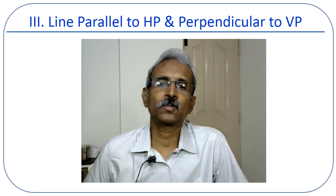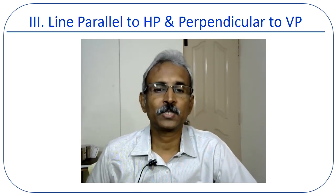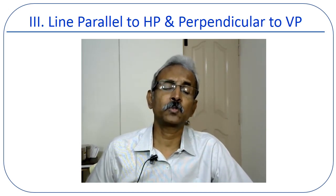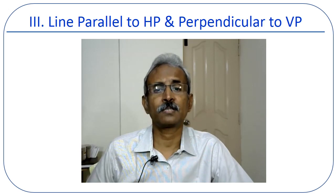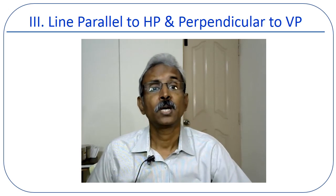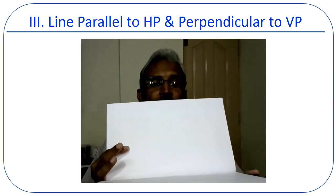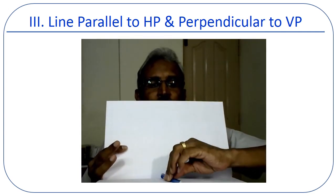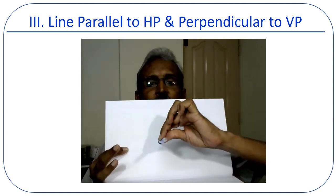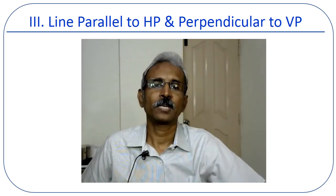Hello viewers, welcome to Part 3 of Projection of Straight Lines. Hope you enjoyed the earlier two sessions and understood the concepts. In this session we are going to discuss how to draw the projections of a straight line which is parallel to the horizontal plane and perpendicular to the vertical plane. Considering this as a first angle projection, the line is parallel to the horizontal plane and perpendicular to the vertical plane.